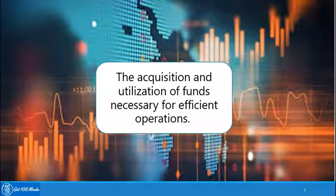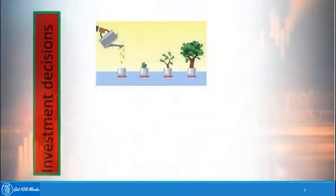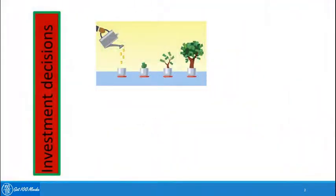There are four primary decisions — four major decisions which are involved under finance functions. Let's take them one by one and understand them.